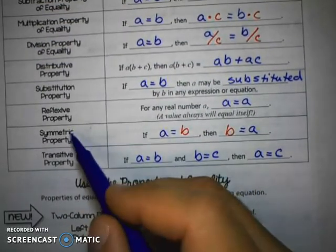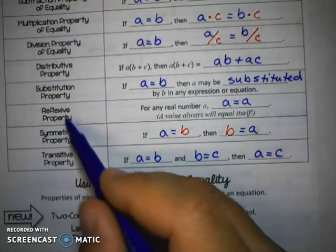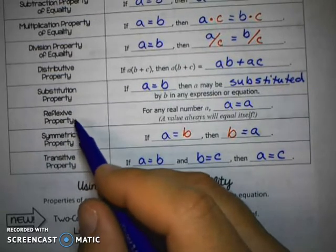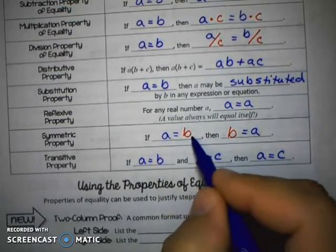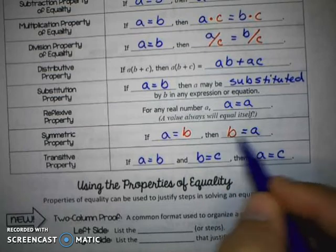Then the symmetric property, which is different than the reflexive. These two are going to confuse you sometimes, but the symmetric property actually has two parts. It says if A equals B, if two different values are equal, then you can reverse their order.